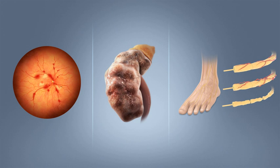The classic symptoms of untreated diabetes are unintended weight loss, polyuria (increased urination), polydipsia (increased thirst), and polyphagia (increased hunger). Symptoms may develop rapidly in type 1 DM, while they usually develop much more slowly and may be subtle or absent in type 2 DM. Other symptoms of diabetes mellitus include weight loss and tiredness. Several other signs and symptoms can mark the onset of diabetes, although they are not specific to the disease.